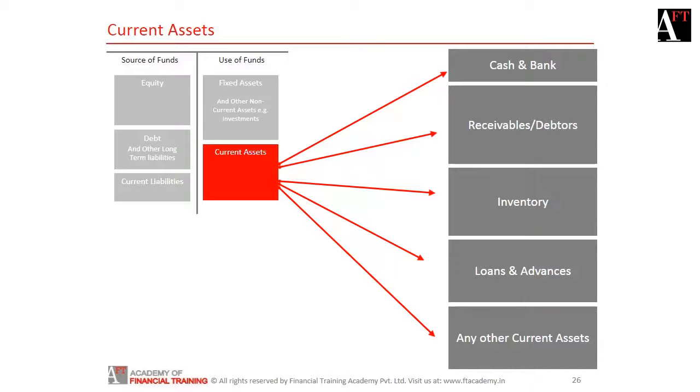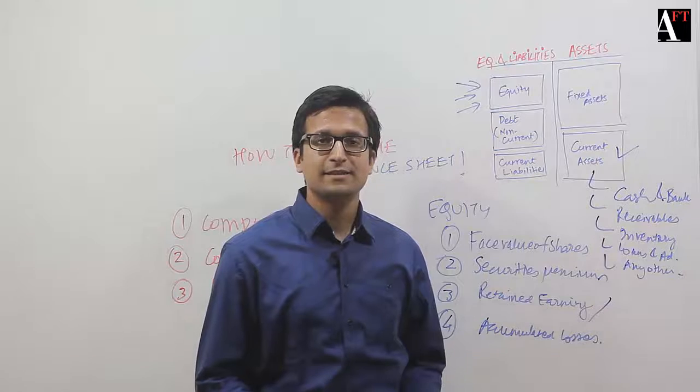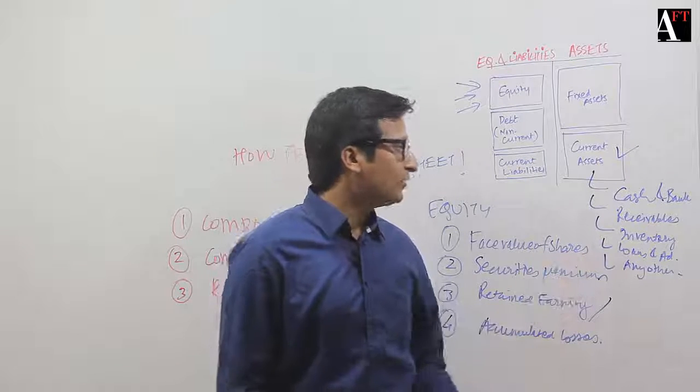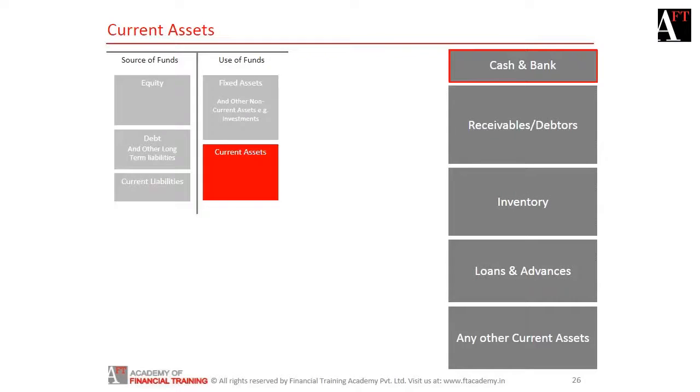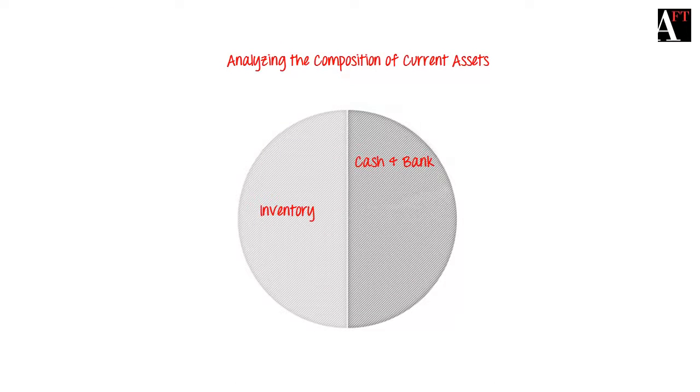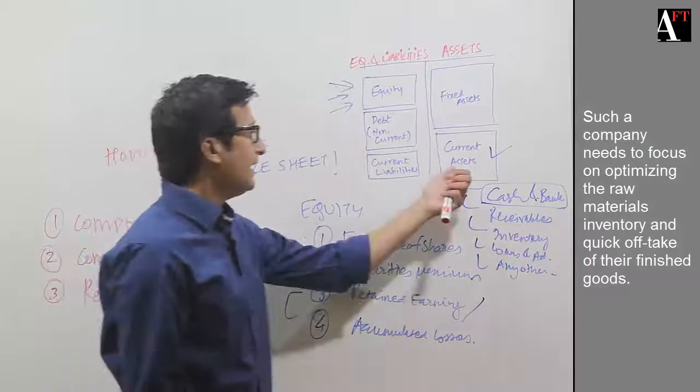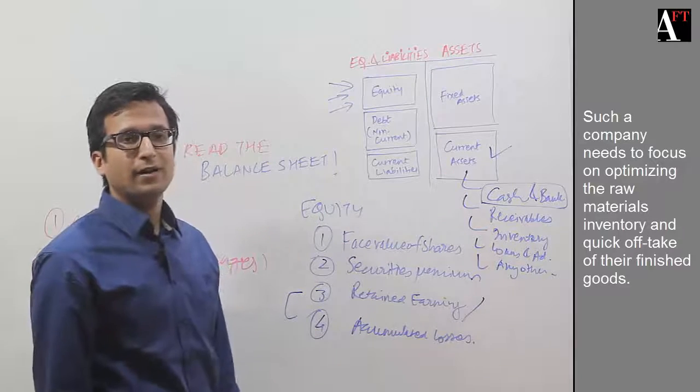I'm trying to understand what is the composition of current assets. I'll try to find out whether cash and bank makes up most of the current assets or is it inventories. If it is majority in the form of inventory and very less cash and bank, that means the inventory is still to be sold and then I will actually have money in my bank account.